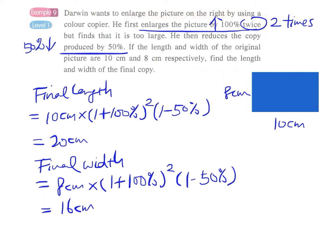We can explore more on this problem. The original area of the picture is 80 cm². The final area is 20 cm times 16 cm, which is 320 cm². The final area is four times the original, while the length is only two times the original.